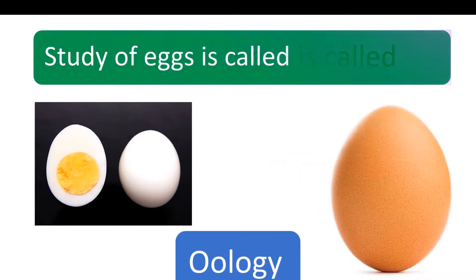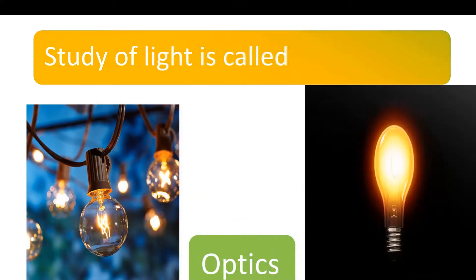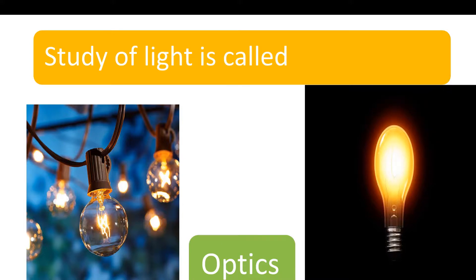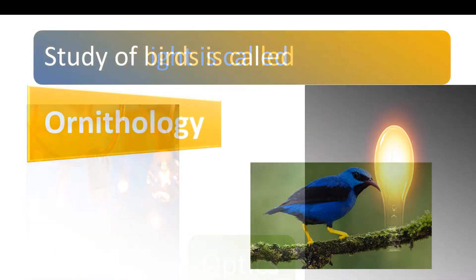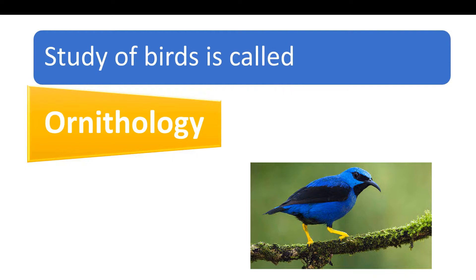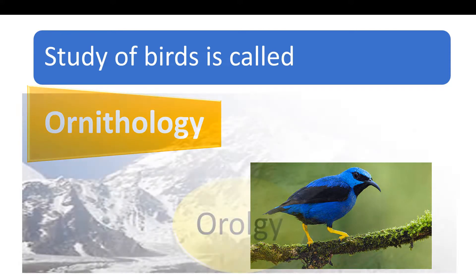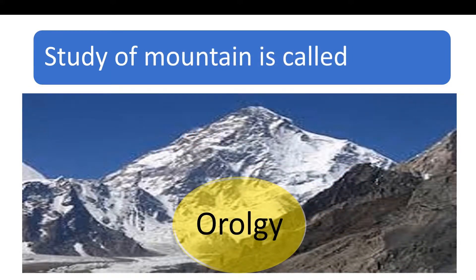Study of egg is called Urology. Study of birds is called Lulinology. Study of Kann units is called Nethology. Study of magnets or swords and metals is called Orology.